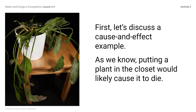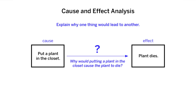First, let's discuss a cause and effect example. As we know, putting a plant in the closet would likely cause it to die. Cause and effect analysis: explain why one thing would lead to another. Cause: put a plant in the closet. Effect: plant dies. Why would putting a plant in the closet cause the plant to die? What ideas would help someone understand this?